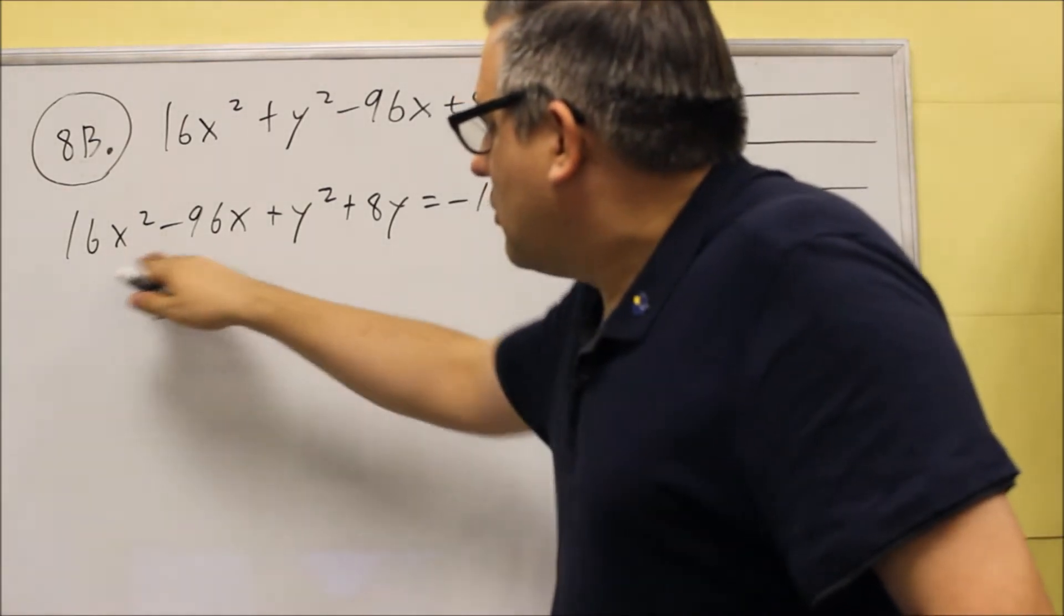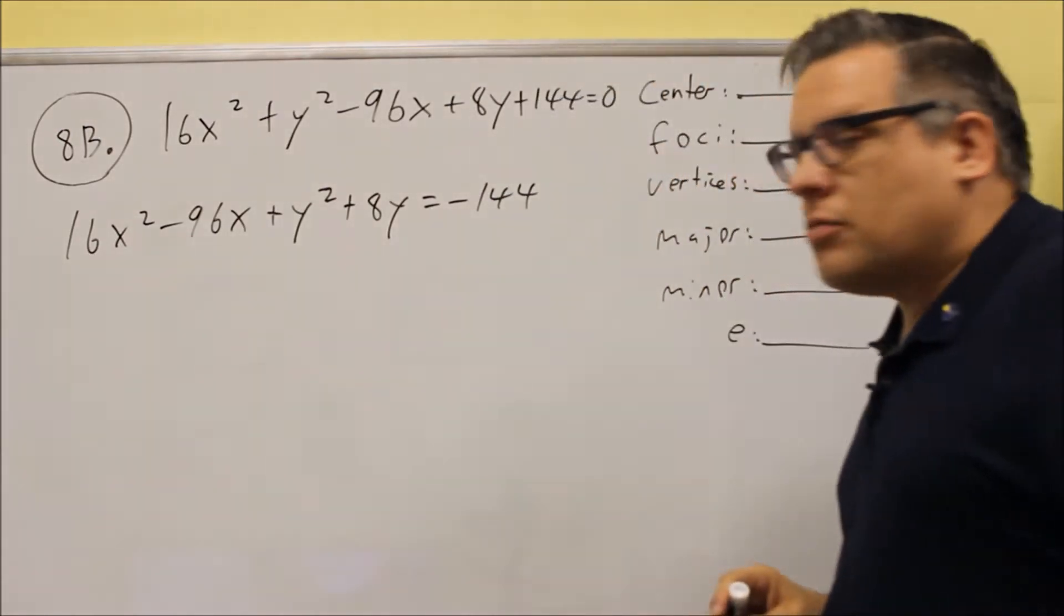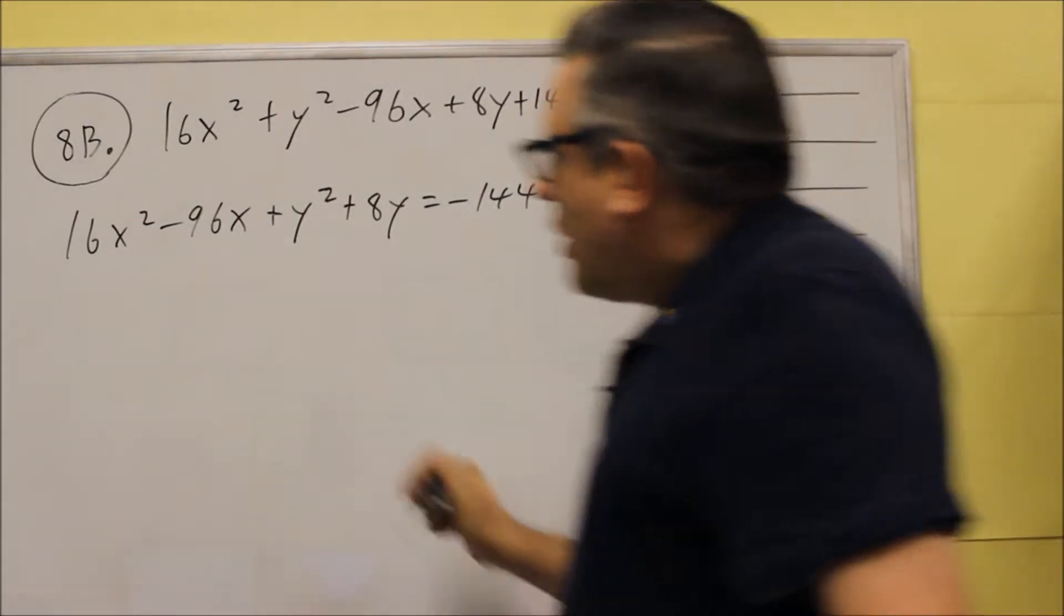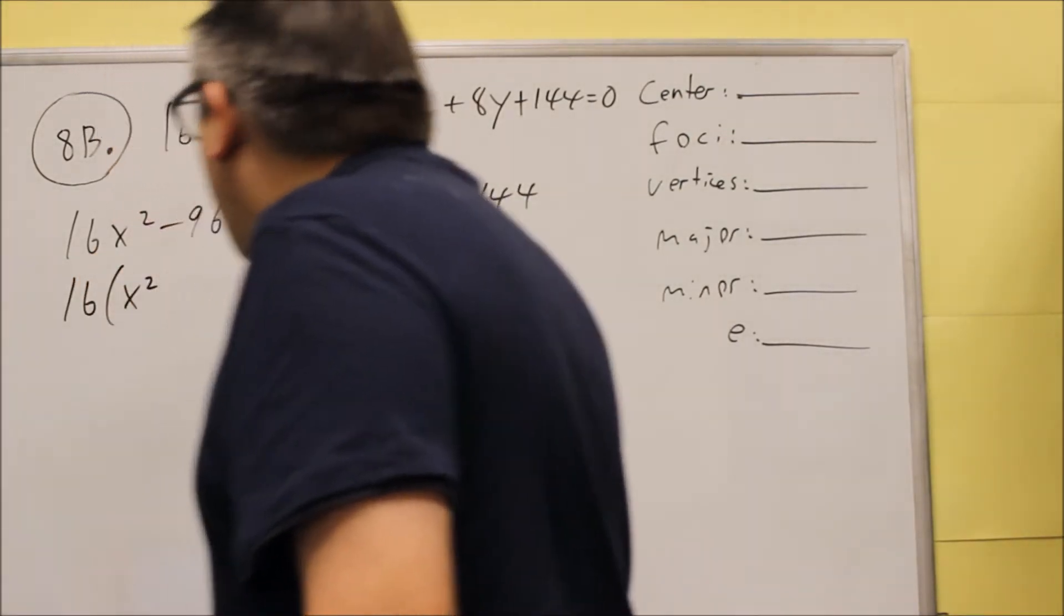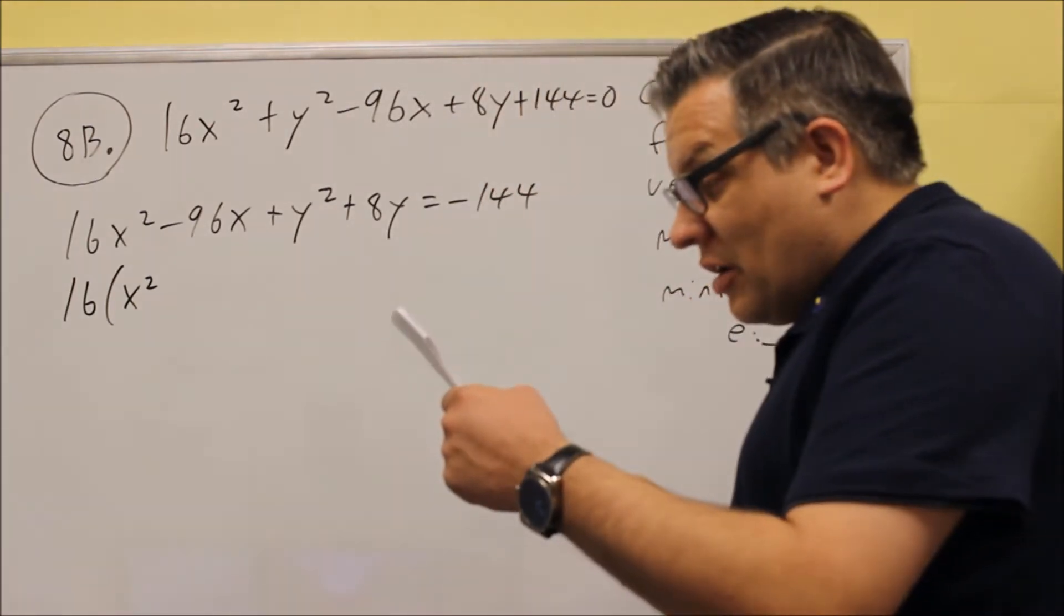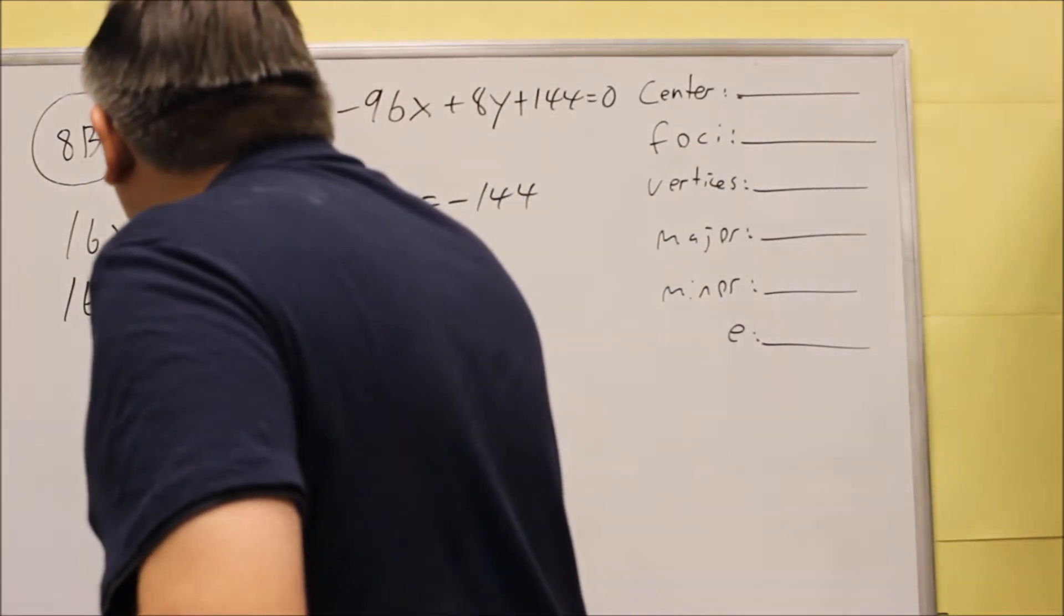We want to factor, take a common factor out of the first two and second two, and we're just going to do that with numbers. So this we're going to take out a 16. We're not going to pull out an X, we just want the number only. So we're going to take out a 16 there. And when we do, we get X squared minus 6X.